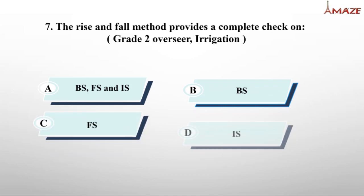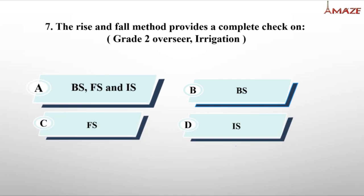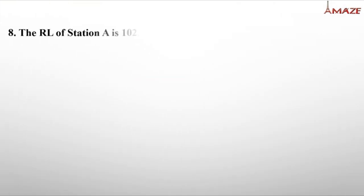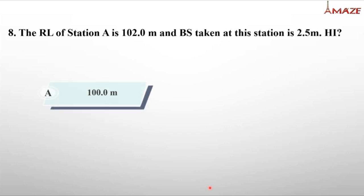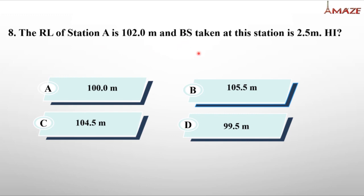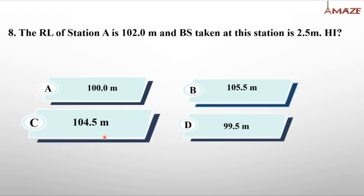The Rise and Fall method provides a complete check on all sights — backsight, foresight, and intermediate sight. The HI method does not check intermediate sights completely. Question: Reduced level of station A is 102.0 m, backsight taken is 2.5 m. Height of instrument = RL of station + backsight = 102.0 + 2.5 = 104.5 m. That is the correct answer.